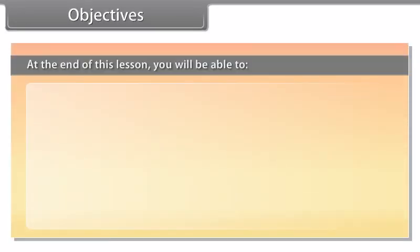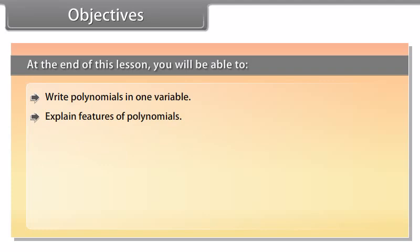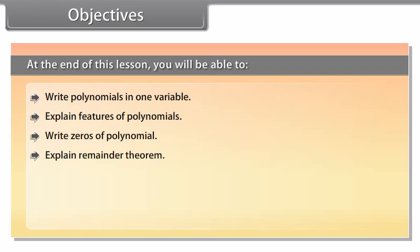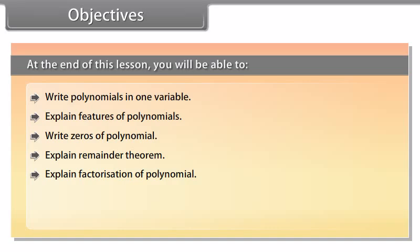Objectives. At the end of this lesson, you will be able to: write polynomials in one variable, explain features of polynomials, write zeros of polynomials, explain remainder theorem, explain factorization of polynomial, write algebraic identities, and solve examples related to polynomials.